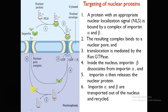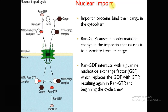After delivering the cargo, importin-alpha and importin-beta are transported out from the nucleus back to the cytoplasm. This cycle then continues for targeting further nuclear proteins in subsequent steps.